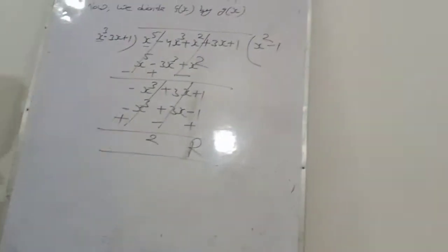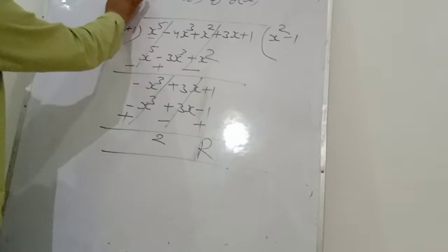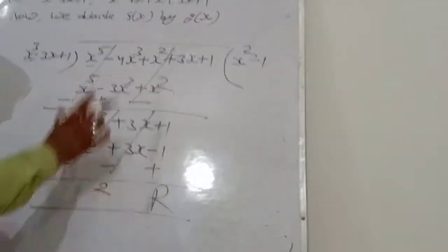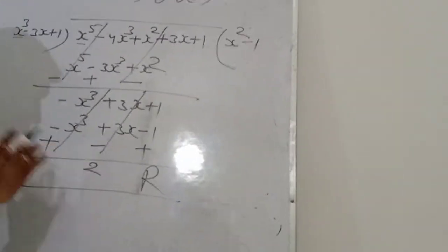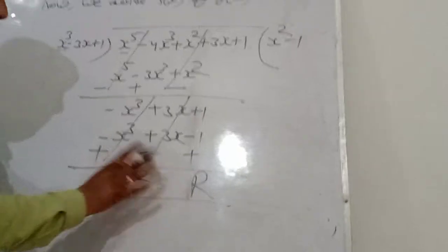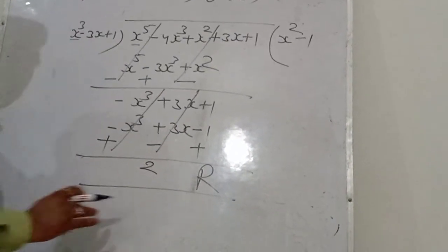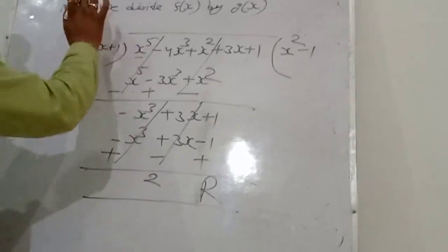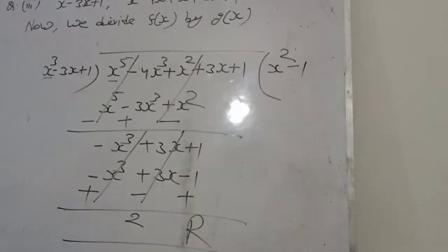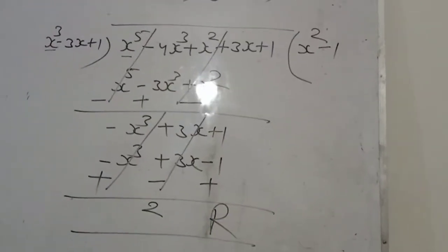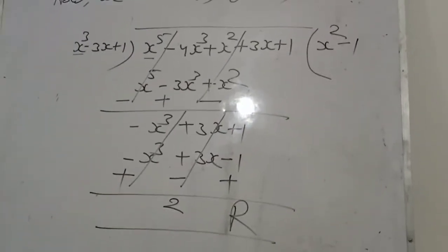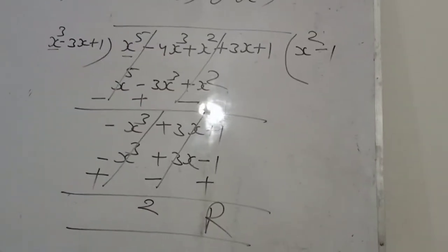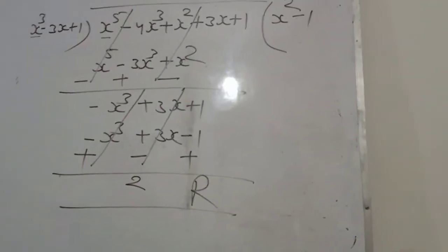Remainder is 2. अगर first polynomial factor है second polynomial का, तो long division जब हम कर रहे हैं, तो यह complete divide होना चाहिए — remainder यहाँ पर नहीं होना चाहिए. But in this question, remainder is 2. So it is proved that the first polynomial is NOT a factor of the second polynomial. Remainder not 0, then first polynomial is not a factor of second polynomial. Clear?